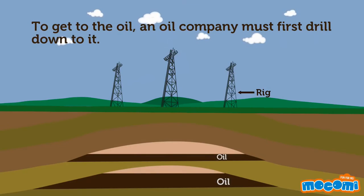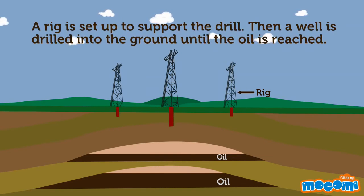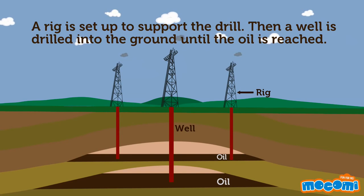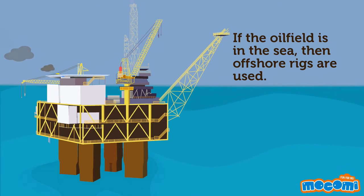To get to the oil, an oil company must first drill down to it. A rig is set up to support the drill. Then a well is drilled into the ground until the oil is reached. If the oil field is in the sea, then offshore rigs are used.